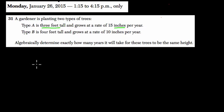So we know that type A, we'll call it A based on X, the years, equals 36 inches at the beginning, and then we gain 15 inches per year after that.